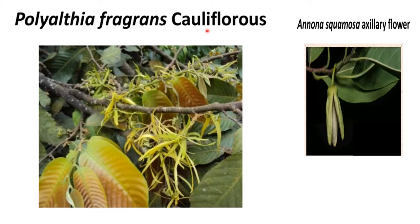Inflorescence is solitary, axillary, terminal, or leaf-opposed. Sometimes cauliflorous, that is, flowers occurring on the stem. An example is Polyalthia fragrans. Here you can see the inflorescence is cauliflorous — flowers occurring on the stem.